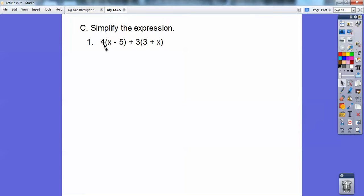So we're going to distribute on this one the 4 through, 4x minus 5. And then this one we're going to distribute the 3 through, so 9 plus 3x. And then we're going to combine like terms after that. So I'm going to combine 4x plus 3x is 7x, minus 20 plus 9 is minus 11. So it's 7x minus 11.